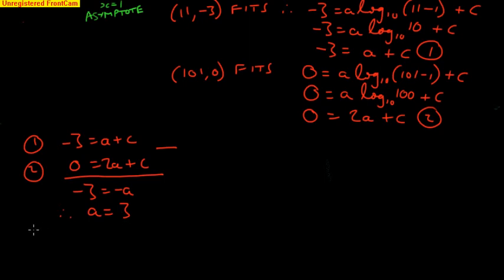Then I will substitute that back in. It doesn't really matter, I can use equation 1 or equation 2. I'll go into equation 2. I get that 0 equals 2 times 3 plus c. 0 equals 6 plus c, and c is negative 6.